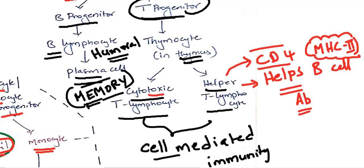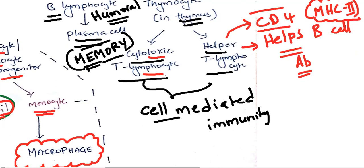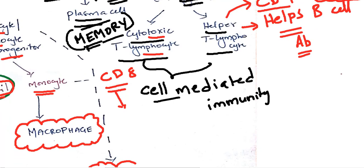Whereas cytotoxic T lymphocytes have CD8 on their cell walls — CD meaning cluster of differentiation. CD8 on cell walls and they bind to MHC1.